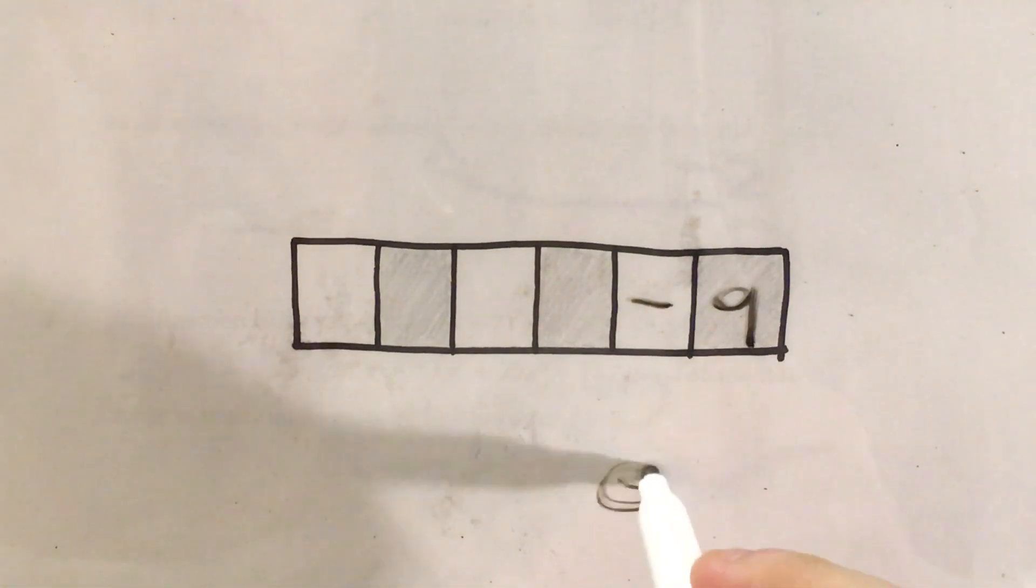I'm going to look for the negative sign bubble underneath the negative sign where I wrote that. I'll look for the 9 bubble underneath the 9 and bubble that in. And that is how we answer and actually write our answer in the gridded response boxes for a question like this.